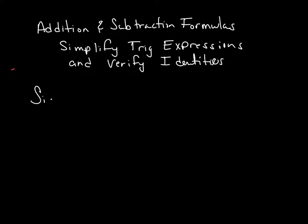All right, so if I give you that I have the cosine of pi over 2 minus x, how would you simplify that?